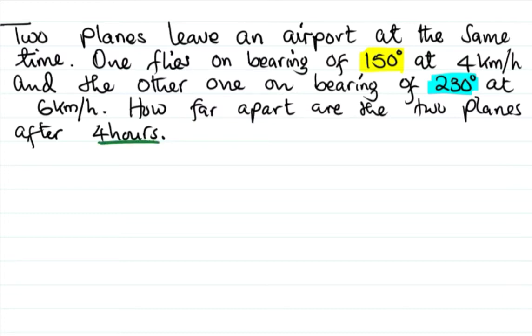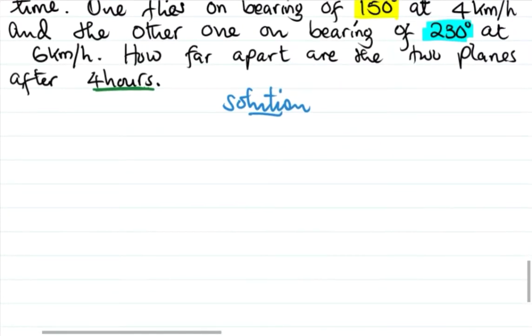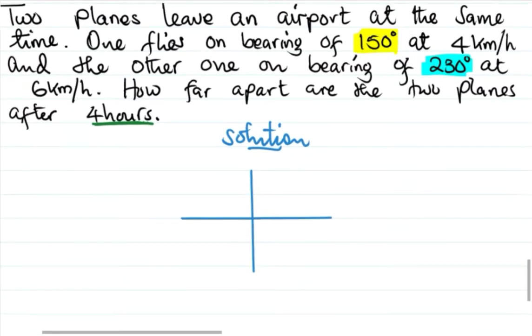So let's have a sketch of this one showing the movement of these planes. Suppose this is our airport, and we have one plane flying on this bearing of 150. Bearing always runs from north to east, so this is north and this is east. This is 90 degrees in one quadrant. 150 is between here, so we need to add something on 90 degrees to get 150, so we're going to add 60 degrees. We have 90 degrees and then 60 degrees, which gives us 30 degrees, so that's 150 degrees.